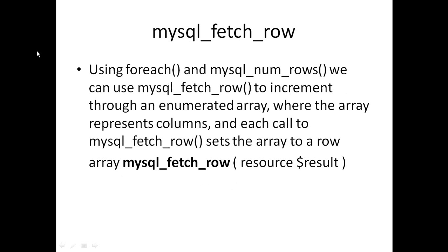mysql_fetch_row: using a for loop and mysql_num_rows, we can use mysql_fetch_row to increment through an enumerated array where the array represents columns, and each call to mysql_fetch_row sets the array to a row. This function returns a MySQL row from your result set as an array. The array indexes — 0, 1, 2, 3, etc. — represent the columns in that particular row. You increment through calling mysql_fetch_row to get the different rows, then check the columns in each row.